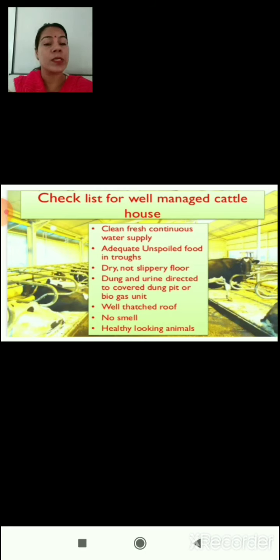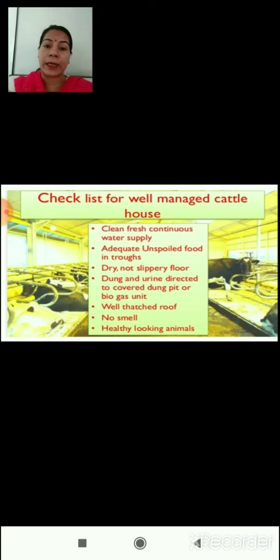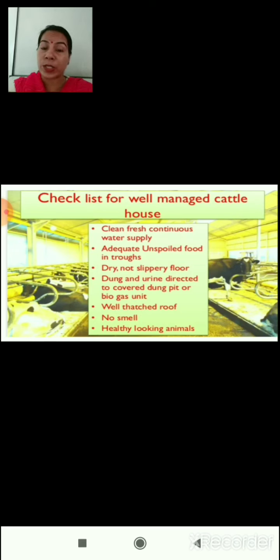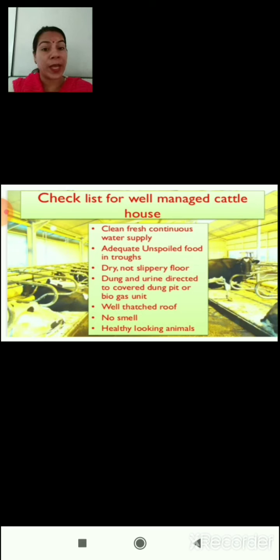Here is a checklist for a well-managed cattle house. It should have clean, fresh, continuous water supply; adequate, unspoiled food provided in troughs; and a dry, non-slippery floor. It should have dung and urine directed to a covered dung pit or biogas unit to maintain cleanliness. It should have a well-thatched roof, no bad smell inside the cattle shed, and healthy-looking animals.